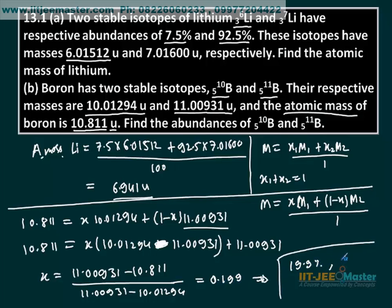So x = 0.199, which as a percentage is 19.9% for boron-10. The other isotope, boron-11, would be 100 minus 19.9, that is 80.1%. So these are the answers — very simple. You should know the formula; the formula was discussed in theory, so I directly used it here.